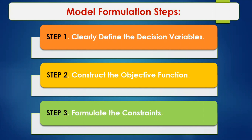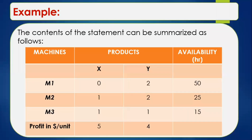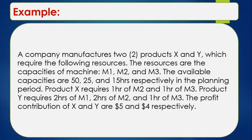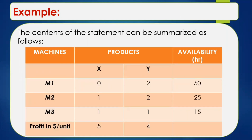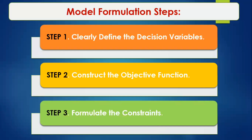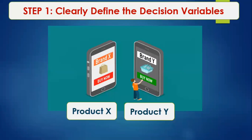Step 1: Clearly define the decision variables. Decision variables are mathematical symbols. In our problem, the company manufactures two products, X and Y. Therefore, our decision variables are Product X and Product Y — or Brand X and Brand Y if preferred. These are clearly identified from the problem statement.